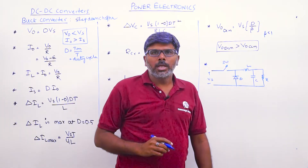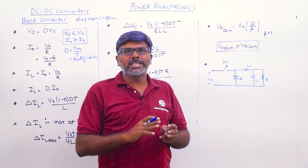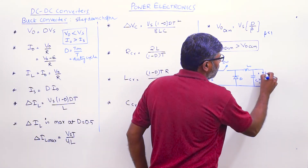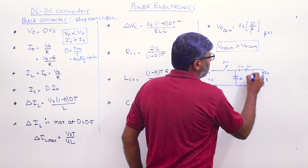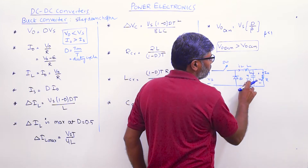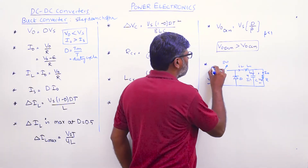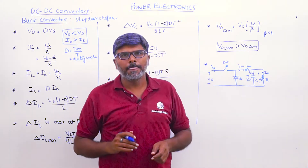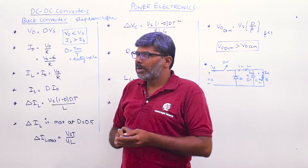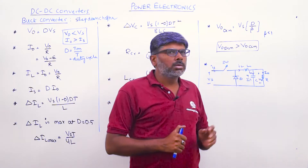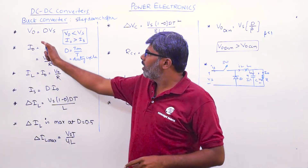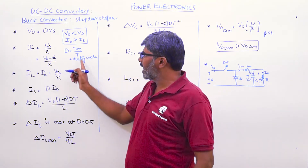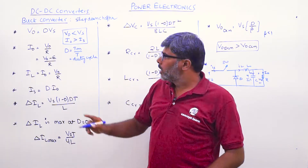When the switch is on and off, we get the circuit analysis. The load voltage is V0, load current is I0, inductor current is IL, capacitor current is IC, and capacitor voltage VC equals V0 always. IS is the source current. We need to derive each parameter. The output voltage V0, by switching this chopper switch on and off, is V0 = D × Vs.